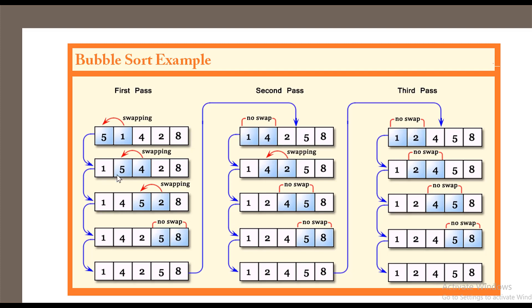In the second comparison, we compare 5 and 4. Is 5 greater than 4? True. Hence 4 and 5 are swapped with each other. Next, is 5 greater than 2? Yes. So 2 and 5 are swapped with each other.